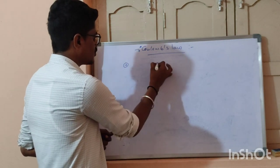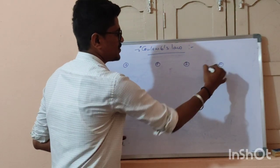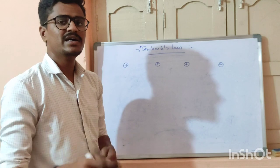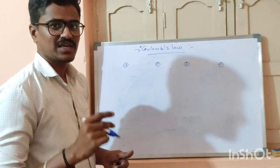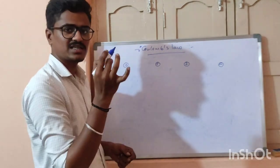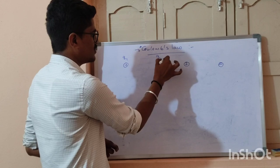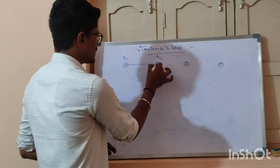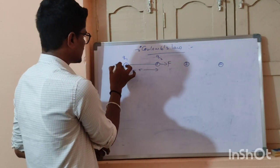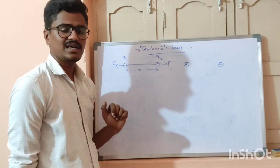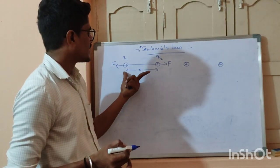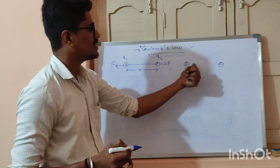Considering two point charges, we have to draw two diagrams: one diagram related to attraction and another related to repulsion. The distance between them is r. F1 is the electrostatic force. Coulomb's law states that the electrostatic force is the attraction or repulsion between two point charges.